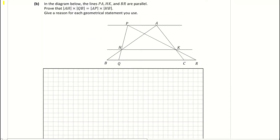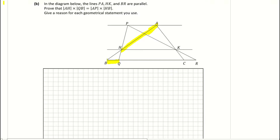Part B asks us to prove the following, giving a reason for each geometrical statement used. Let's mark off the line segments: AH, QB, AP, and HB. As I mark them off, we're forming two triangles. I'm going to join the line segment PHQ, and you can see here that we've made two triangles. We're going to show that those two triangles are similar, which links back to Part A.